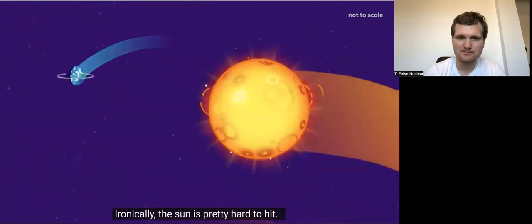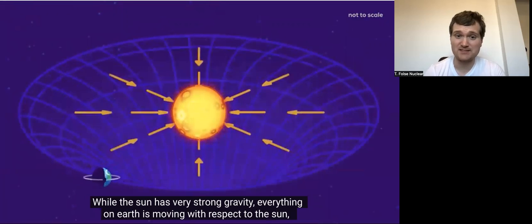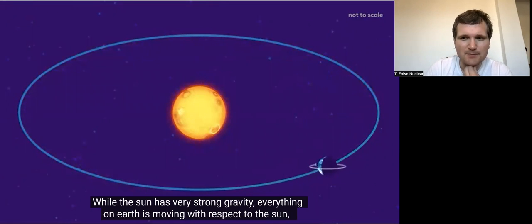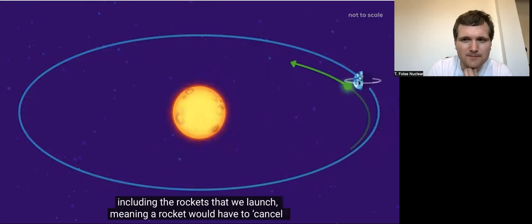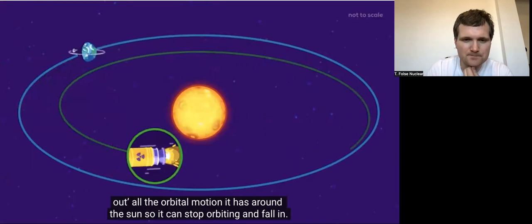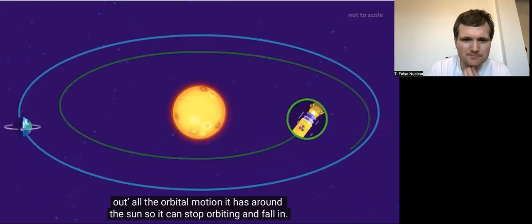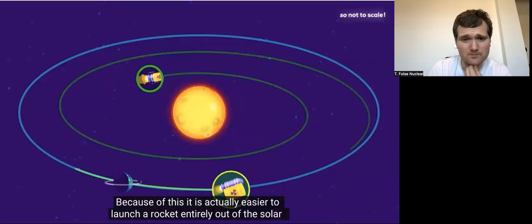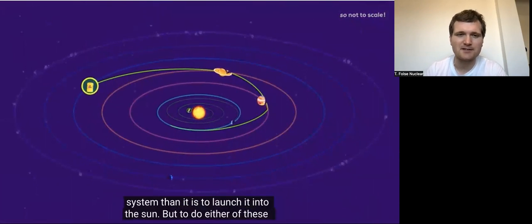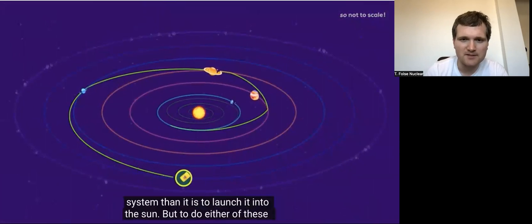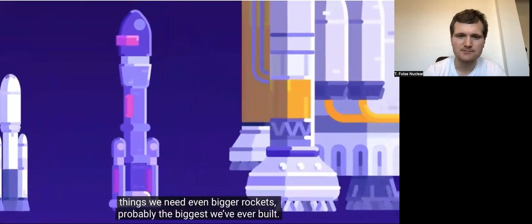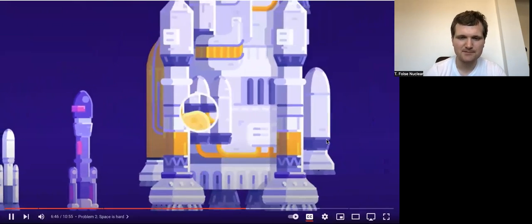Ironically, the Sun is pretty hard to hit. And the Sun produces a lot more radiation too than stuff on Earth. Everything on Earth is moving with respect to the Sun, including the rockets that we launch, meaning a rocket would have to cancel out all the orbital motion it has around the Sun, so it can stop orbiting and fall in. Because of this, it's actually easier to launch a rocket entirely out of the solar system than it is to launch it into the Sun. But to do either of these things, we need even bigger rockets, probably the biggest we've ever built. Hmm. Nothing works.